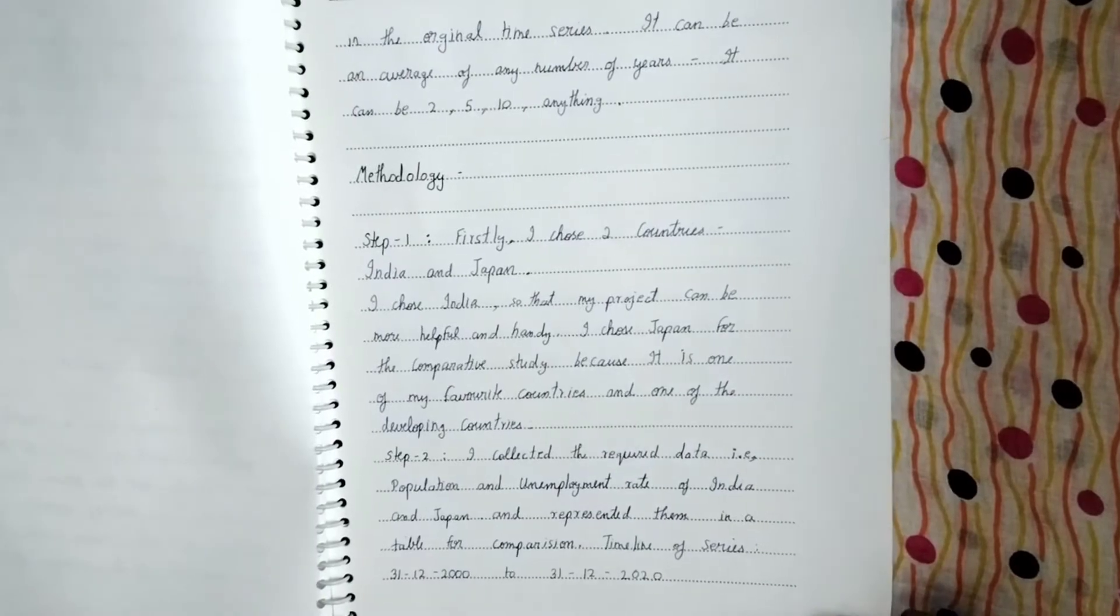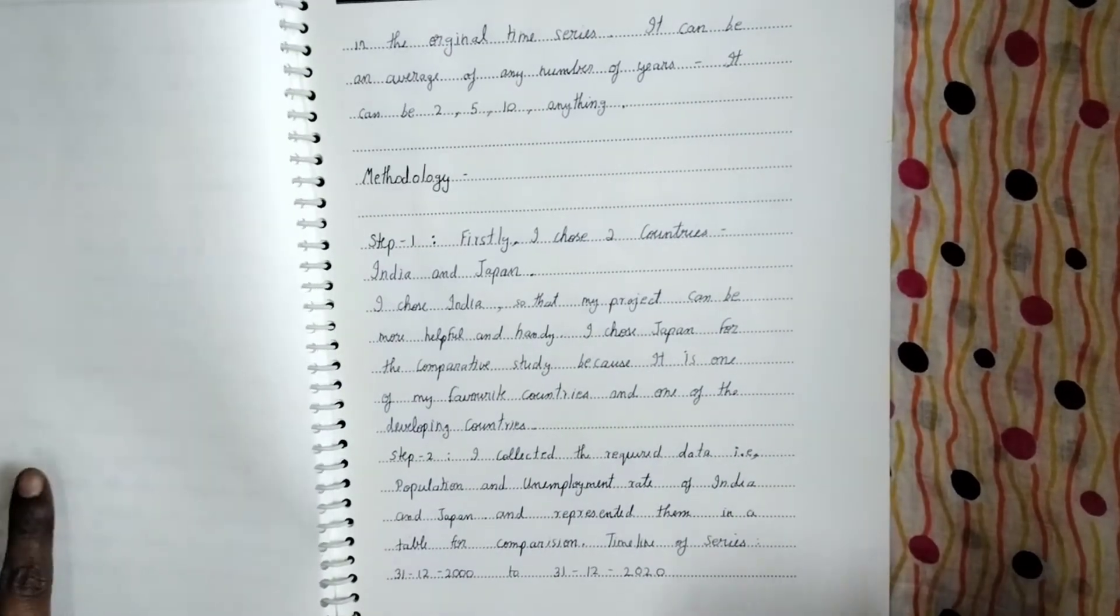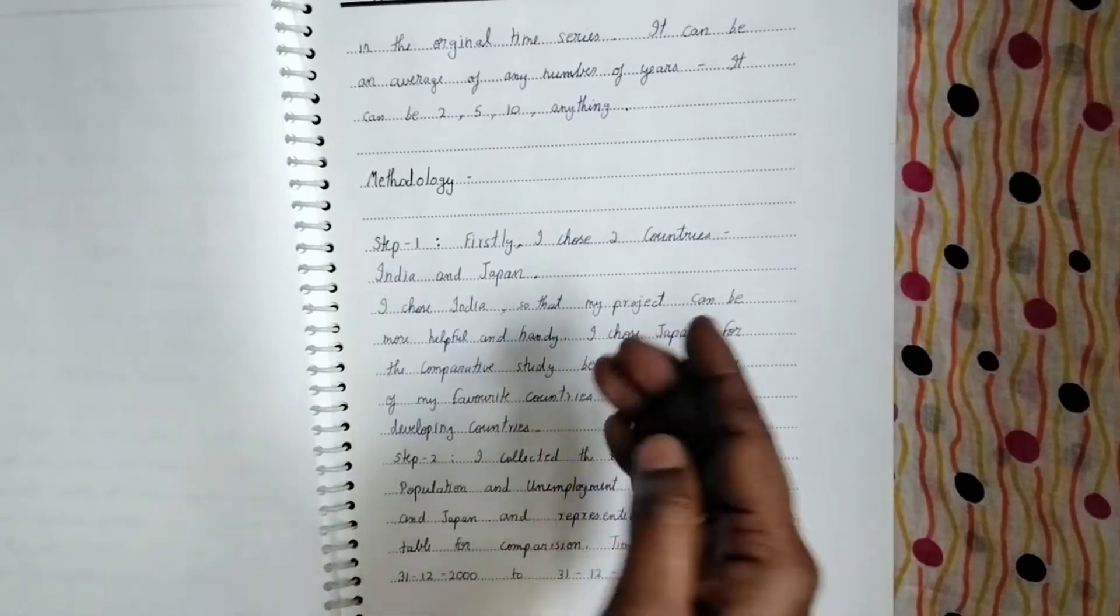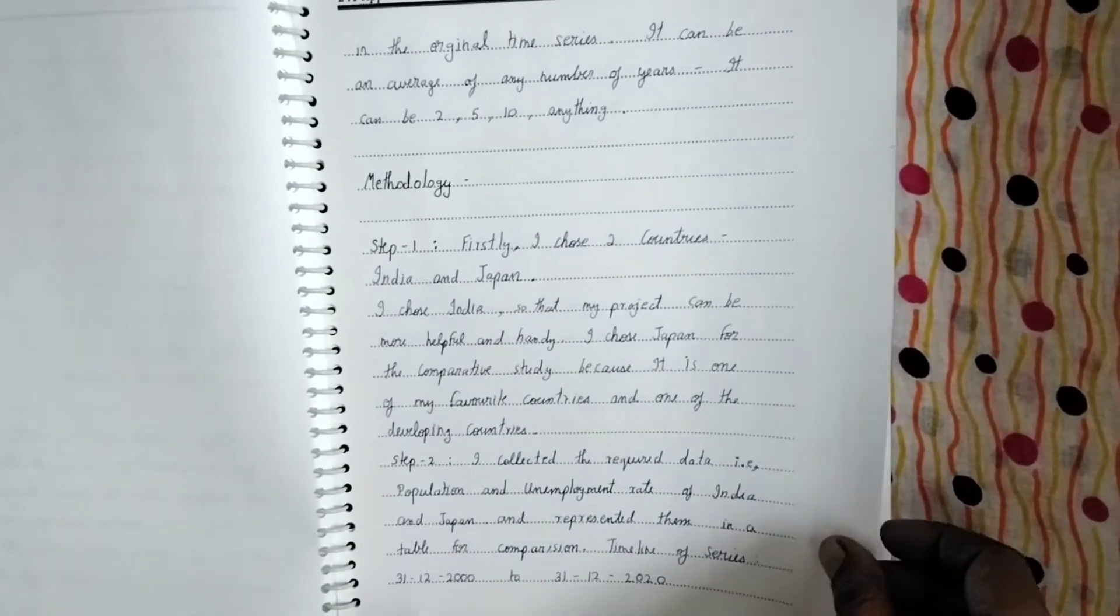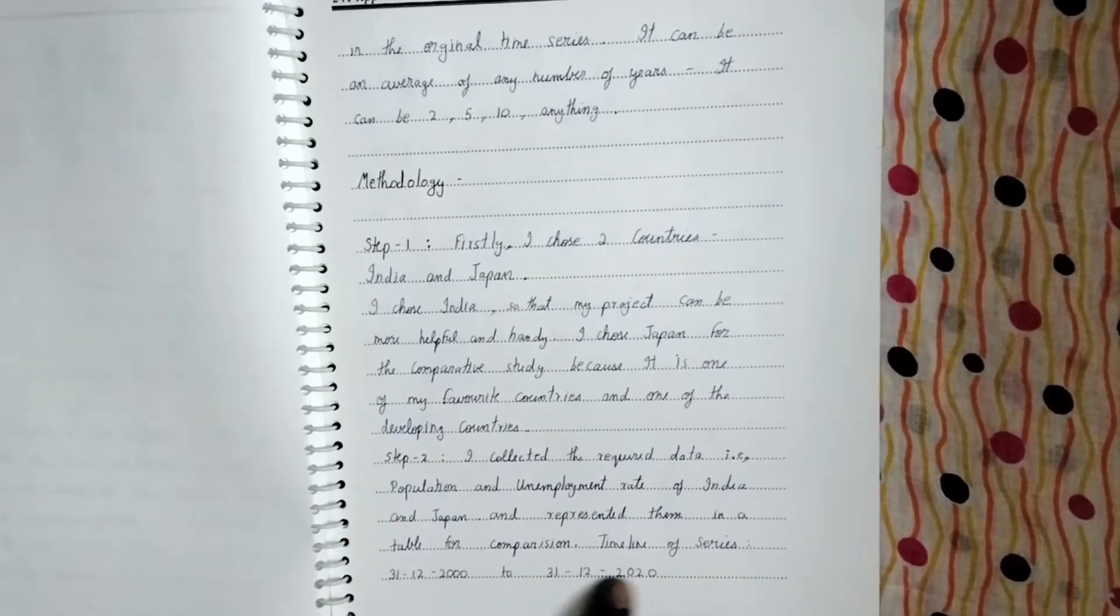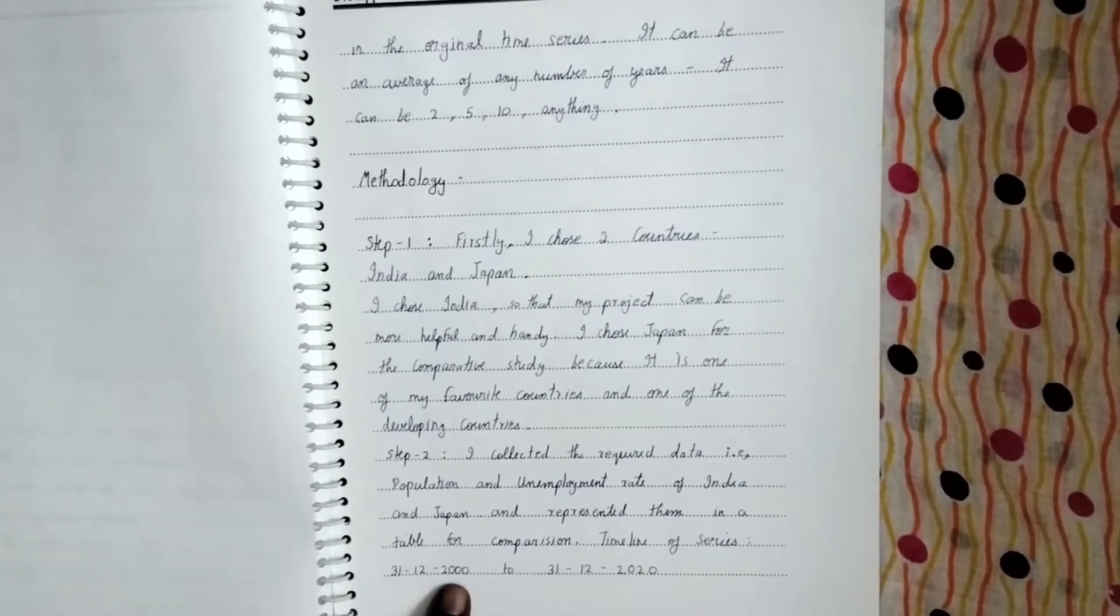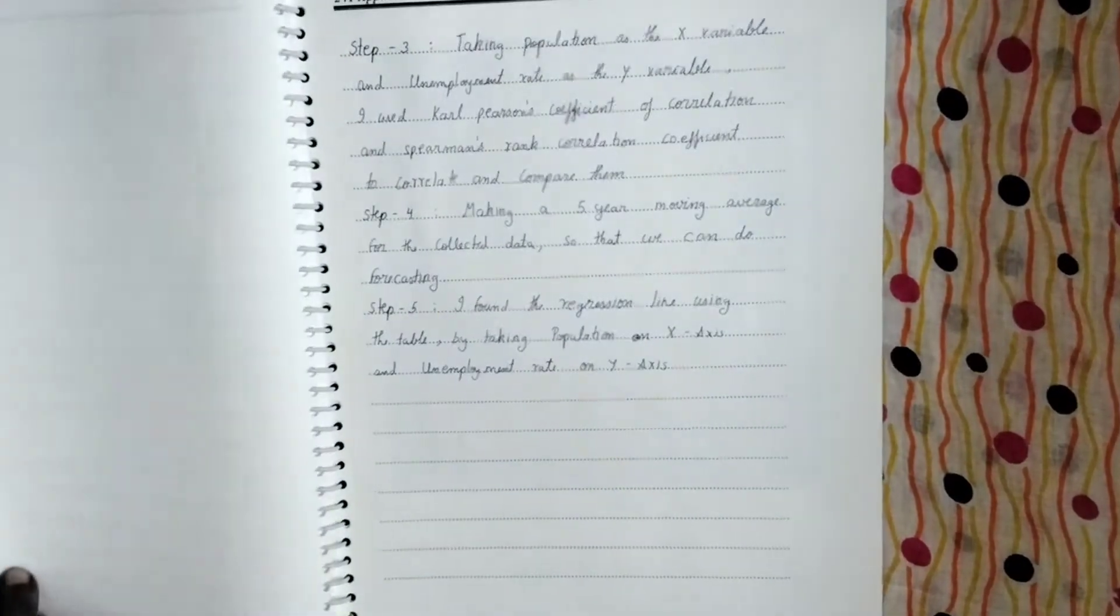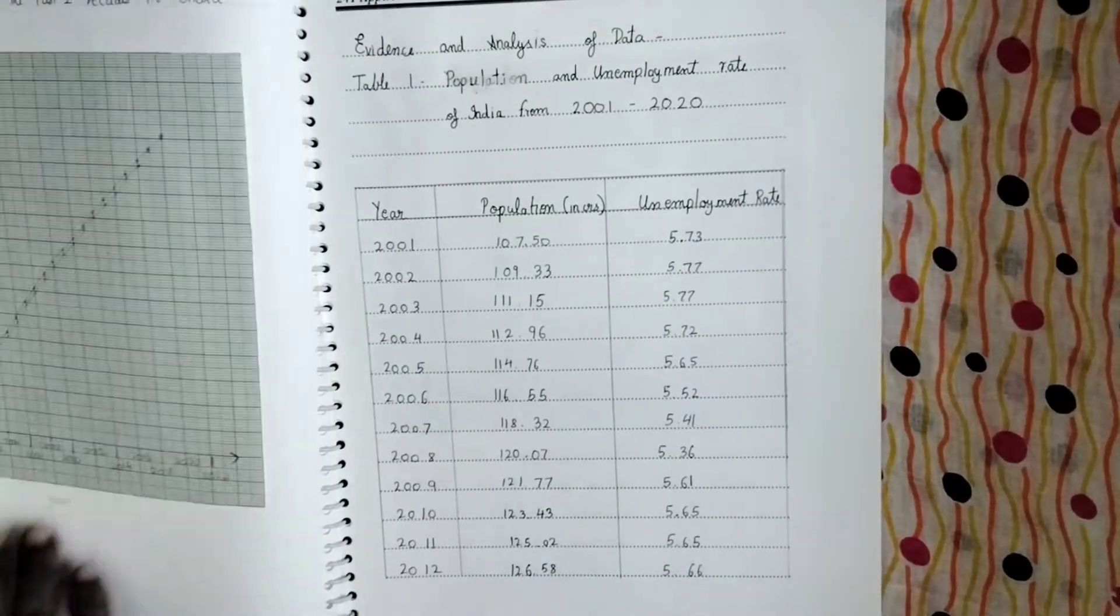So in methodology, first he's actually explained what has he done. So firstly, I chose two countries, India and Japan and all that is given from where did he collect the data. So he's given the timeline of the series 31-12-2000 to 31-12-2020. He's done the analysis. So that is what he's explained.